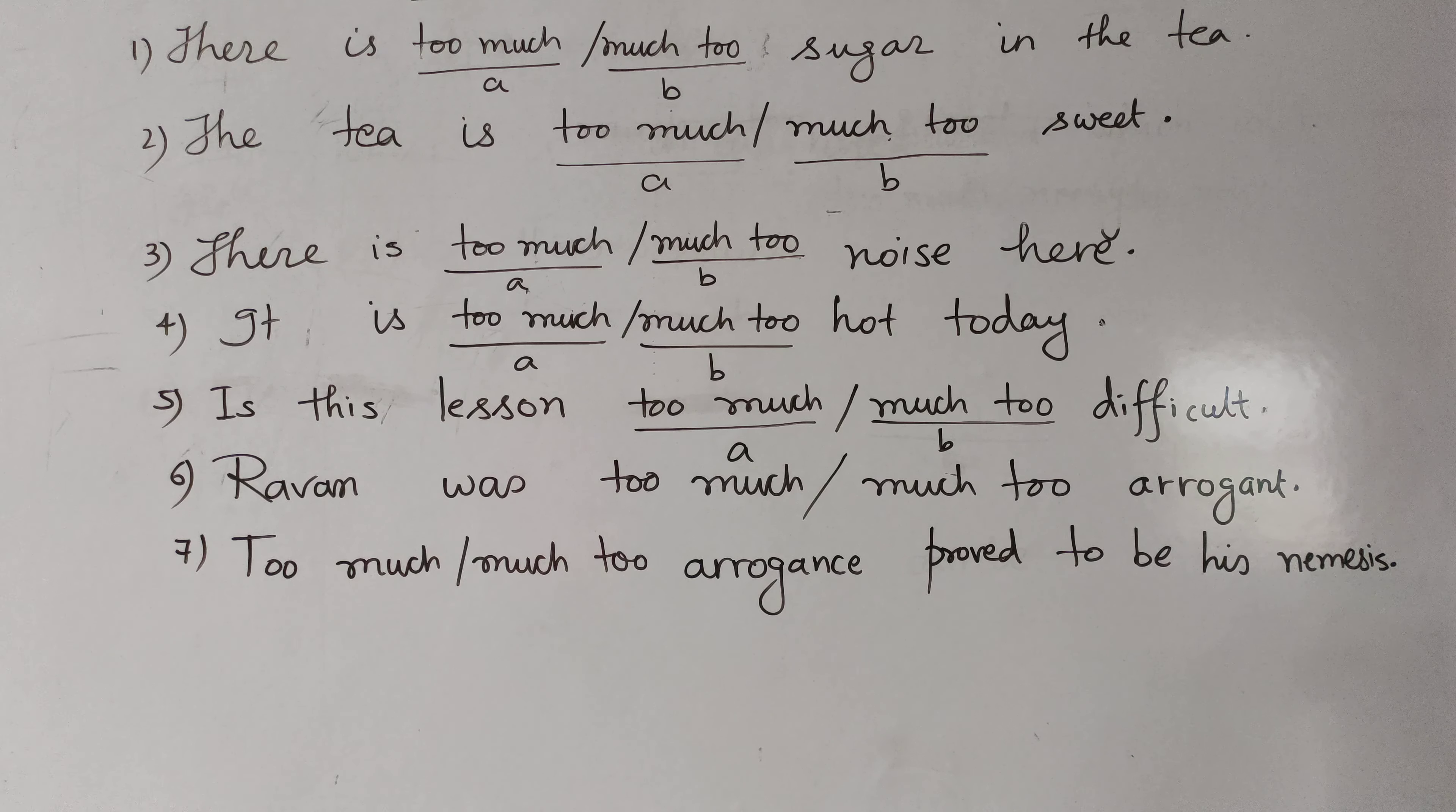Number 4. It is dash hot today. Now, you choose. It is too much hot today. It is much too hot today. Yes. B is the right option. It is much too hot today. Aaj zarurat se zyadha garmi hai. It is much too hot today.